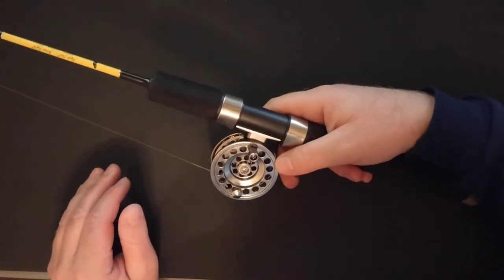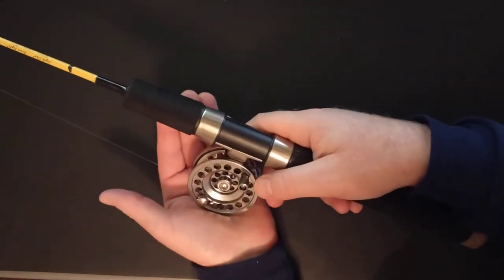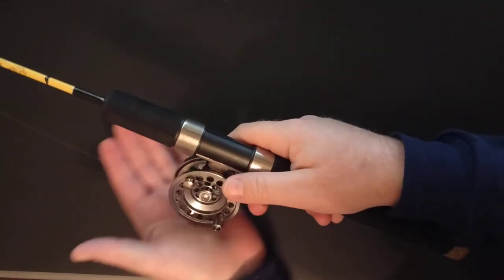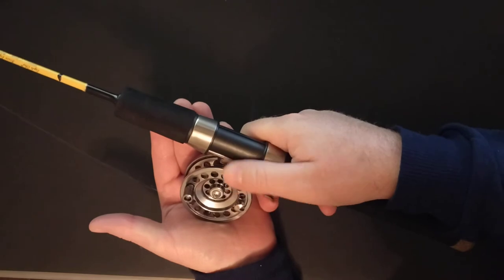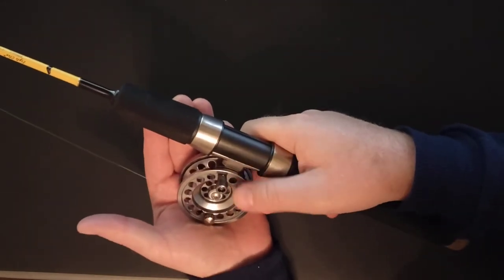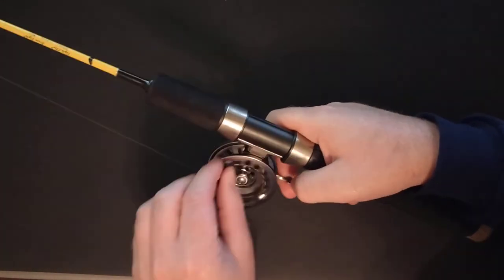If the fish started to run and you needed to play it, you could cup the reel and apply friction with the heel of your hand to let some line back out, let the fish fight, and then reel it back in.